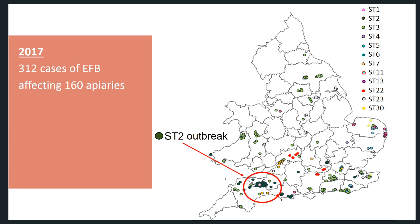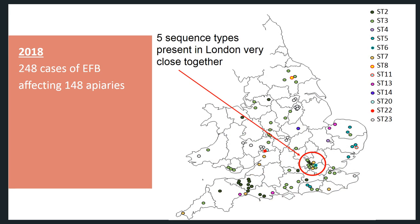In 2017, there were 312 cases of EFB in 160 apiaries, with a different strain type outbreak this year — strain type 2, which is very persistent in the south-west of England, where they suffer from sporadic outbreaks of this strain. In 2018, there were fewer recorded cases than in recent years, with only 248 cases affecting 148 apiaries. Many different strain types of EFB were found in the Greater London area in 2018, which may reflect movement of bees or an increase in the number of inspections in that area.